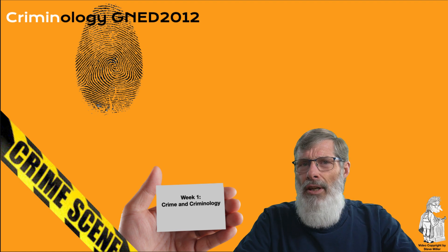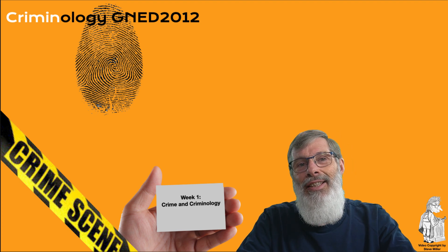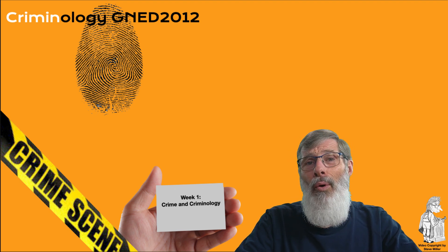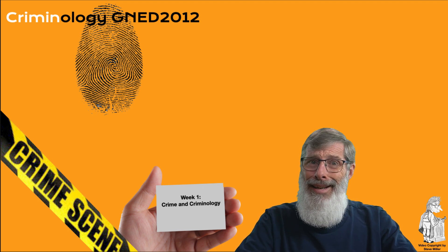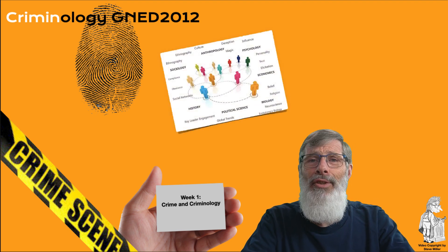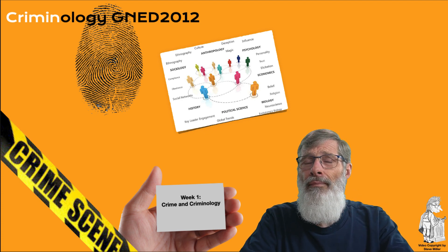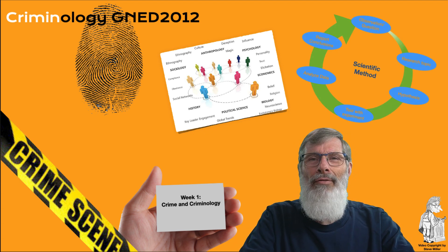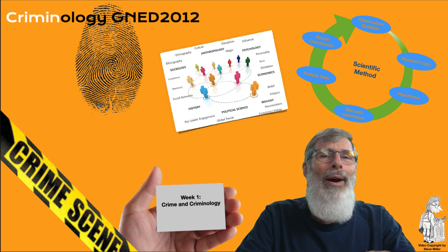Criminology is an interdisciplinary science in which systematic study is used to explore the nature, extent, cause, and control of criminal behavior. A few key characteristics: first, it is an interdisciplinary science, meaning many different disciplines work together to understand crime and deviance. Second, it is a scientific study — it avoids subjective points of view and emphasizes objectiveness, unbiased reporting, and evidence-based inquiry.